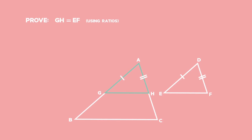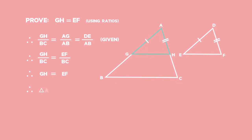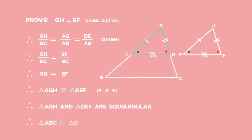In triangle ABC, the ratio GH to BC equals the ratio AG to AB. Since AG equals DE, this also equals the ratio DE to AB. Likewise, the ratio GH to BC equals the ratio EF to BC, therefore GH equals EF. We already know AG equals DE and AH equals DF, so with three sides of triangle AGH equal to three sides of triangle DEF, by SSS, triangle AGH is congruent to triangle DEF. Congruent triangles are equiangular, and therefore triangle ABC is similar to triangle DEF.